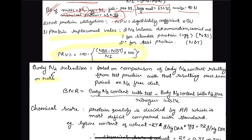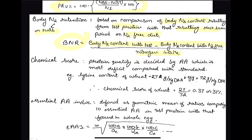Body Nitrogen Retention is used on rats, because it requires killing the animal. Two groups are compared: one given the test protein diet and one given a nitrogen-free diet. The body nitrogen content of the two groups is compared, and the difference divided by nitrogen intake gives Body Nitrogen Retention.